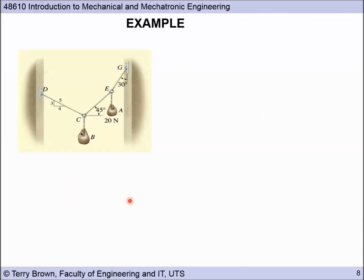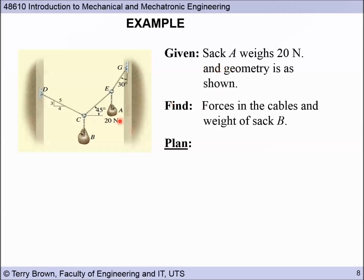The next example is this system of cables and weights. So we have sack A here of 20 newtons with the geometry shown. We're asked to find forces in the cables and the weight of sack B. Now this is what I like to call a football training problem. It's not likely that you'll ever have to do this sort of a problem exactly in practice. You're going to know what the weight of the load is you're putting on here, you're not going to work it out from angles. But it's good practice and it helps you to apply the process of solving engineering mechanics problems. So that's why I like to call it a football training problem.